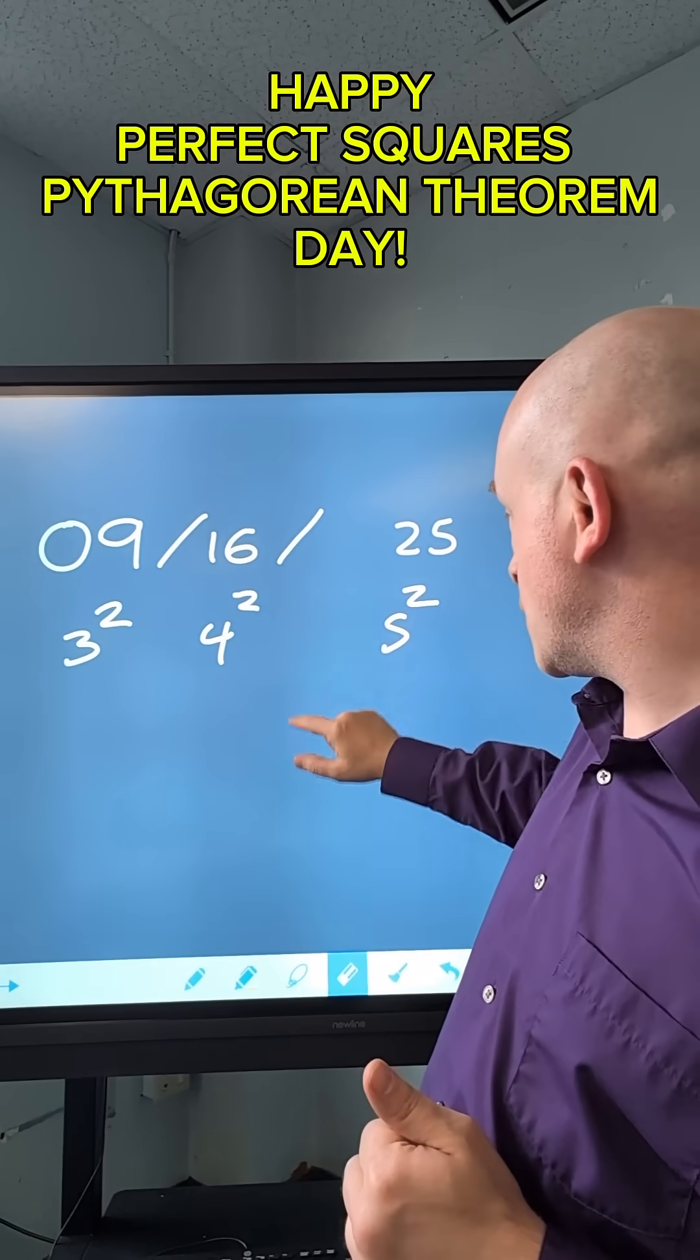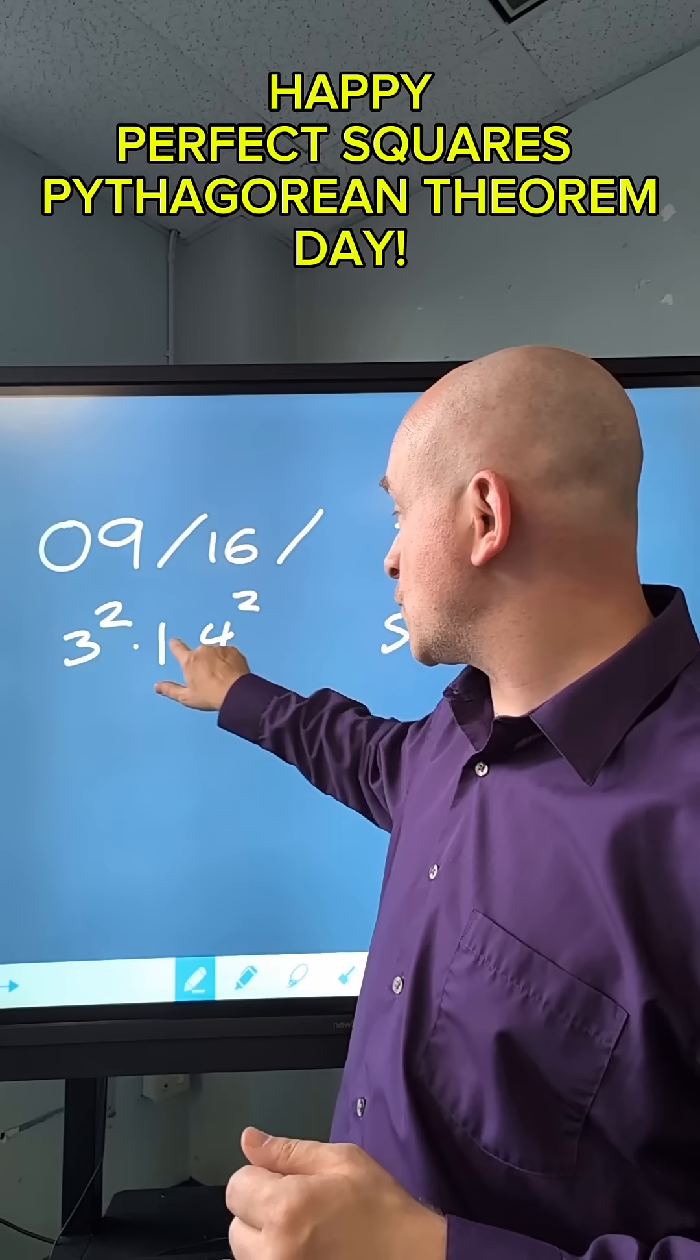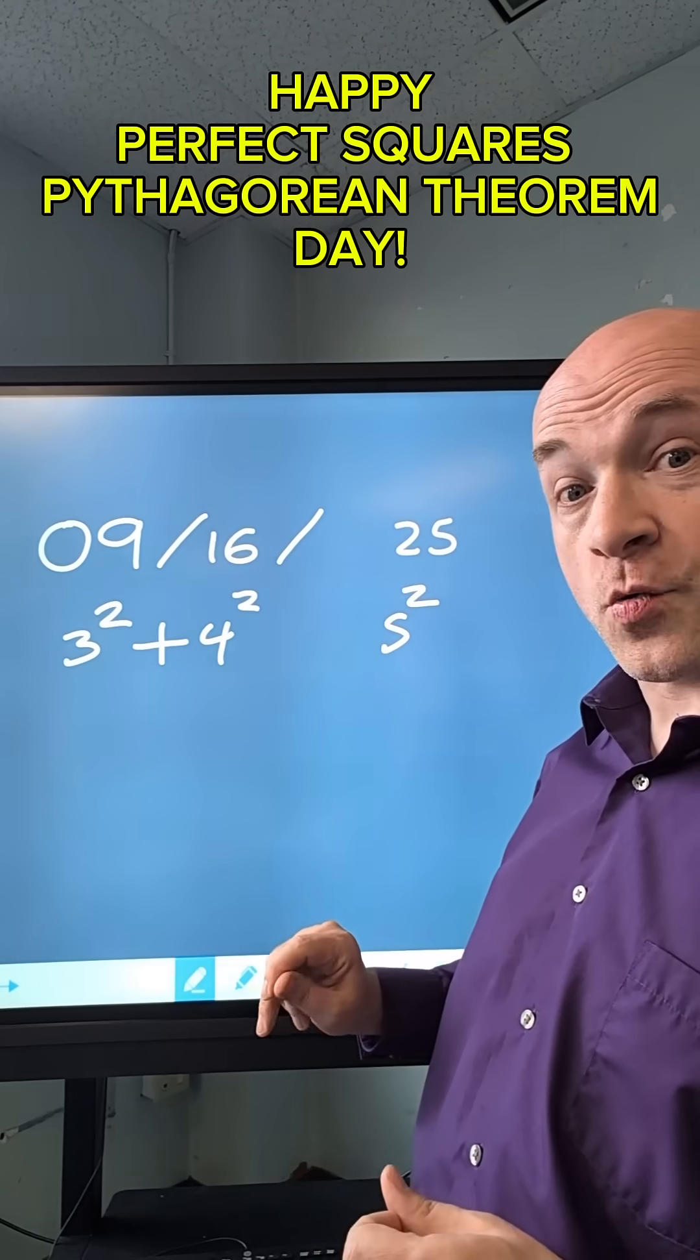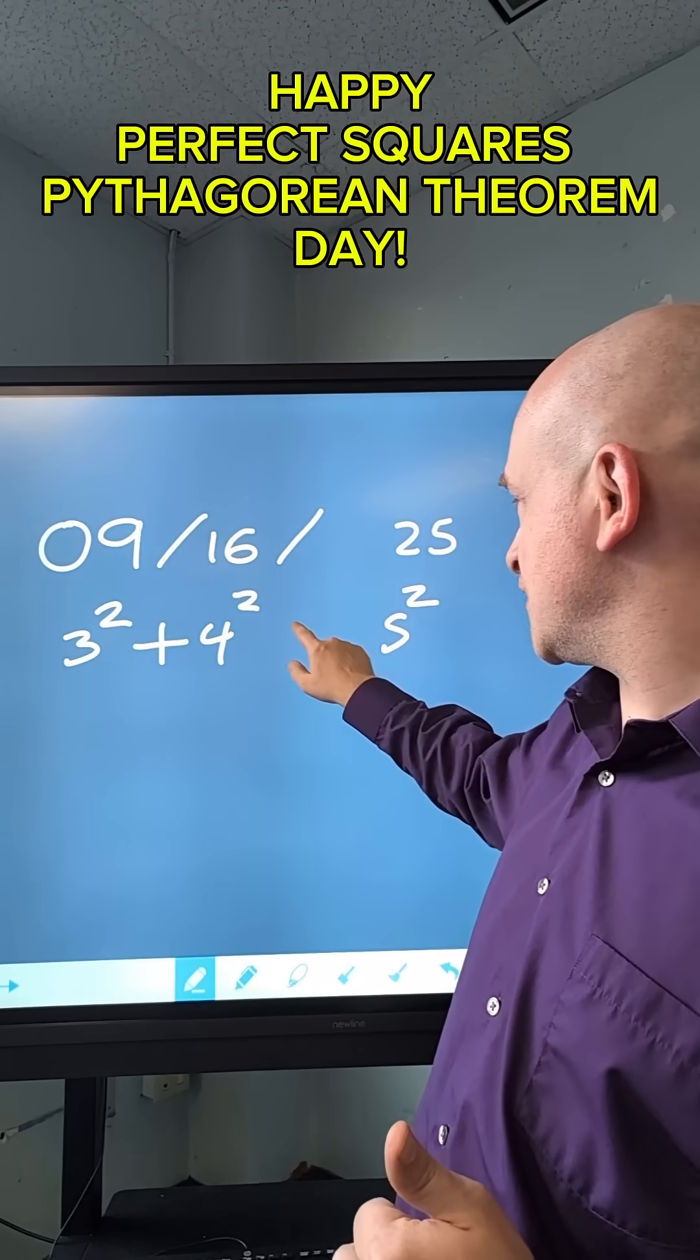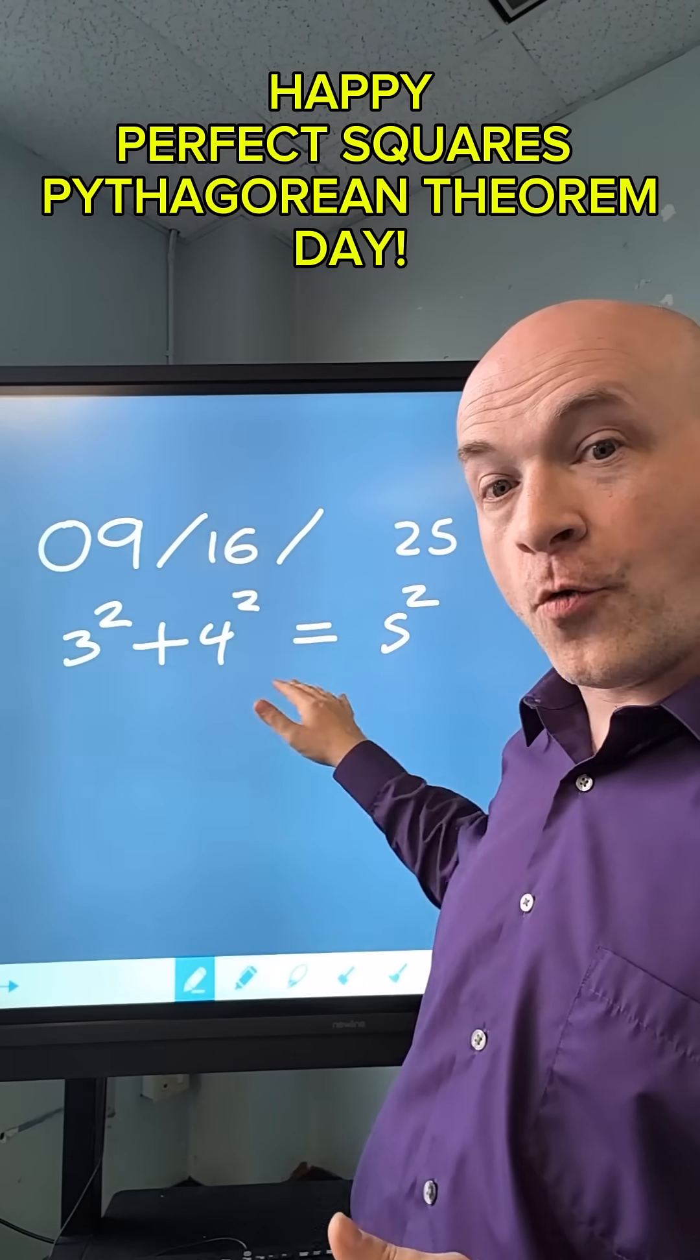25 is equal to 5 squared, and if you take 3 squared plus 4 squared and add that up, it totals the 25 of 5 squared. That means that 3, 4, and 5...